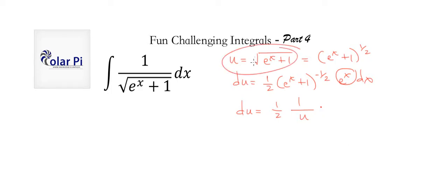And then times e to the x, well, based on this, what would e to the x have to be? Well, if we square both sides of this expression I just circled up here, this guy here, then we could write u squared is equal to e to the x plus 1, and then subtracting 1 from both sides of this equation I just wrote, u squared minus 1 is equal to e to the x.